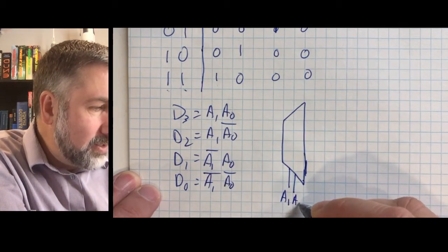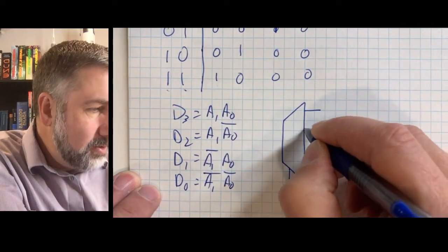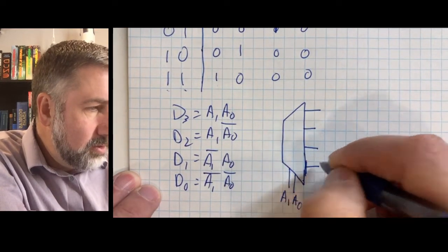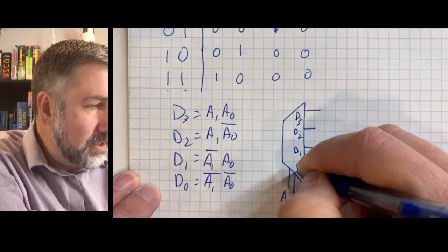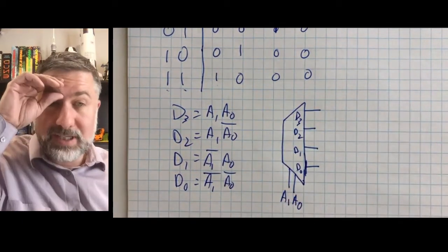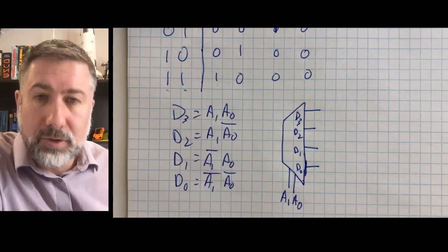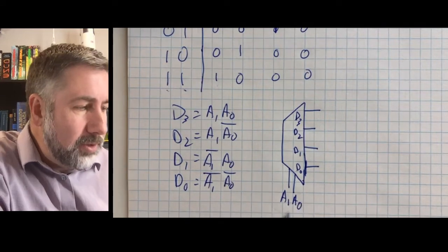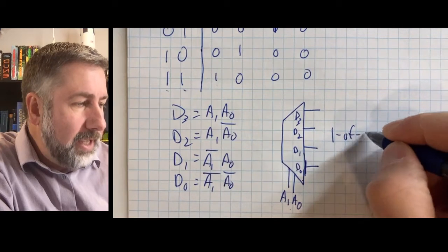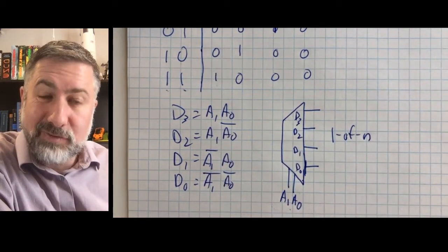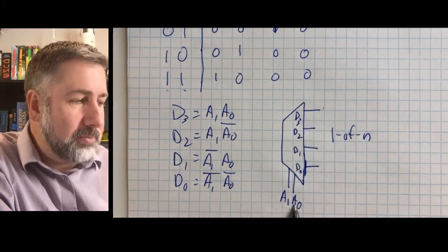We have inputs A1 and A0, and then we have four outputs for D3, D2, D1, and D0. So this is our first combinational device — it's a decoder. It takes an encoded binary combination and presents what we call a 1-of-n representation for that number. If we give it number 3, bit 3 is on.